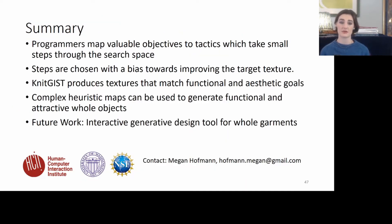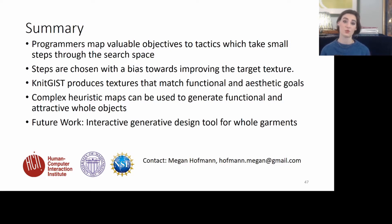In summary, KnitGist enables programmers to map valuable objectives to tactics which take small steps through a search space. Those steps are chosen with a bias towards improving the target texture, but still widely search the space. KnitGist produces textures that match functional and aesthetic goals and can create whole objects. In future work, this system has been structured in such a way that we can create an interactive, generative design tool for whole garments.